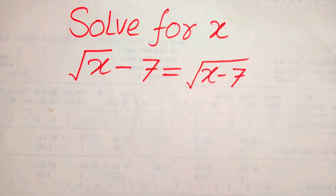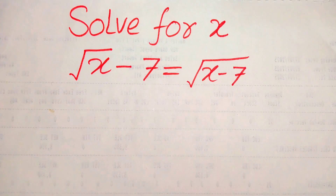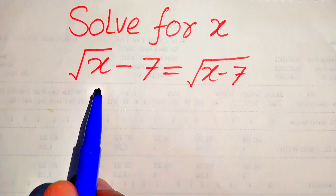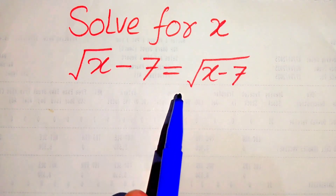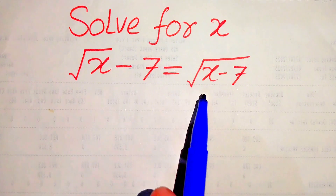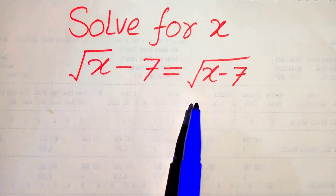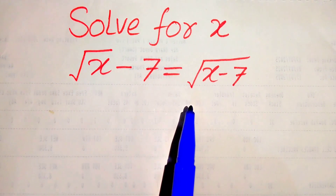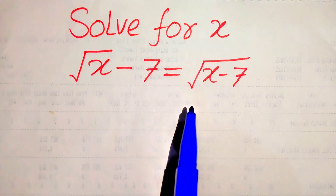Hello everyone, welcome to solve this nice math or algebra problem. Here we have a nice radical equation: square root of x minus 7 is equal to square root of x minus 7, and we solve this problem for the values of x.